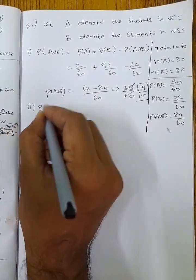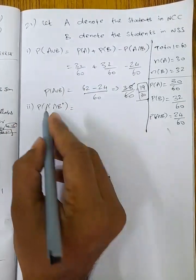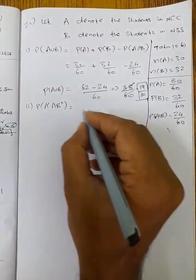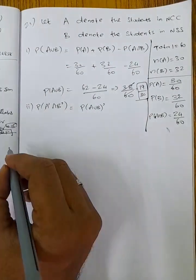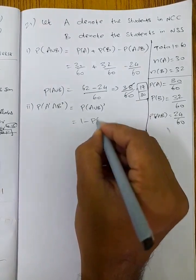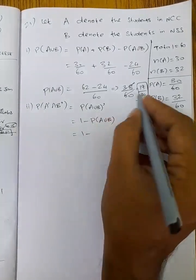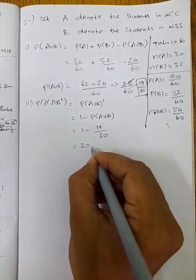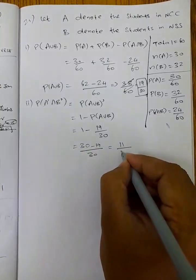Second part: neither NCC nor NSS. P of A dash intersection B dash equals P of A union B whole dash, which is 1 minus P of A union B. So, 1 minus 19/30 equals 11/30.